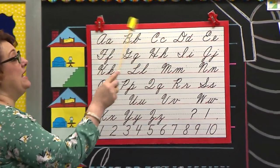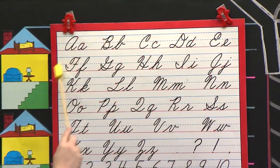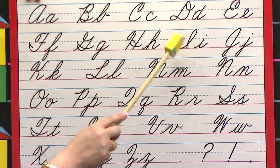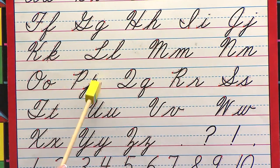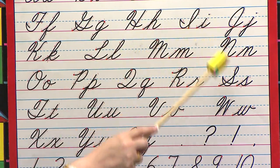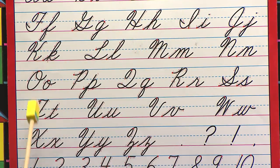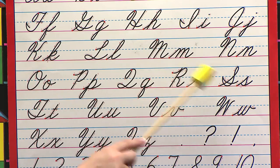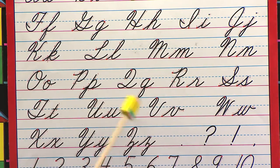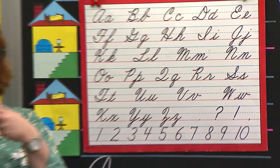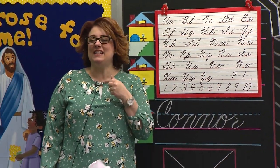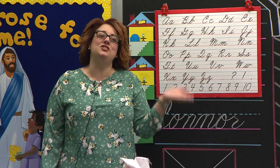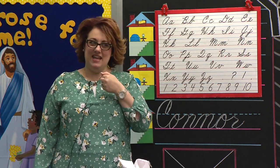A, B, C, D, E, F, G, H, I, J, K, L, M, N, O, P, Q, R, S, T, U, V, W, X, Y, and Z. Now I know my ABCs. Tell me what you think of me.